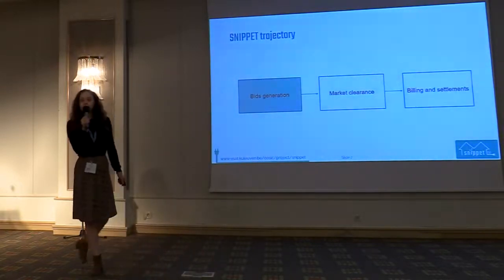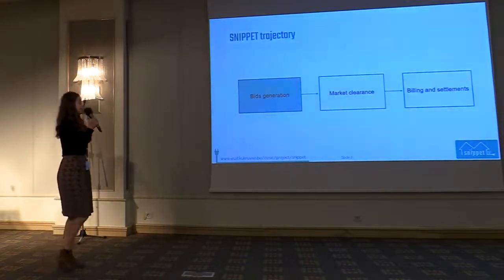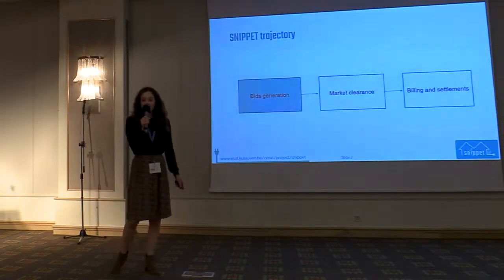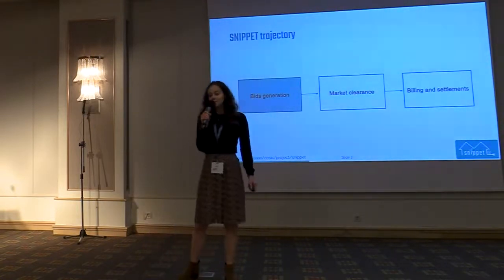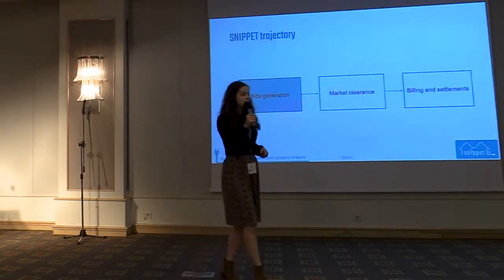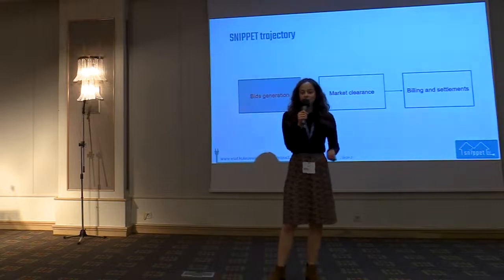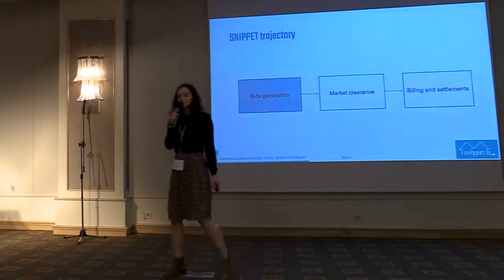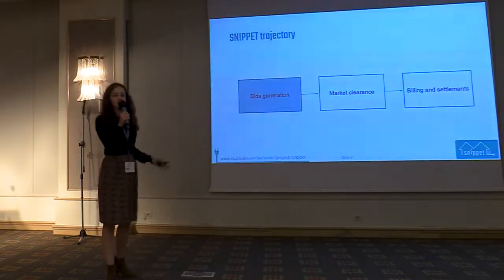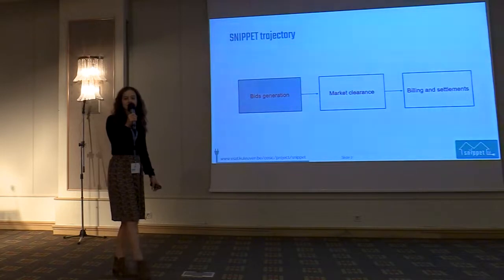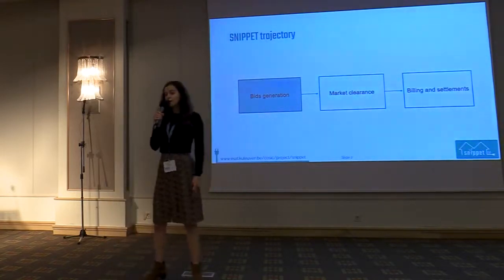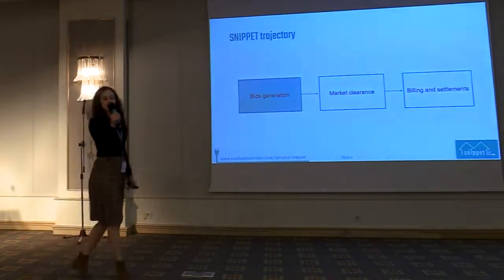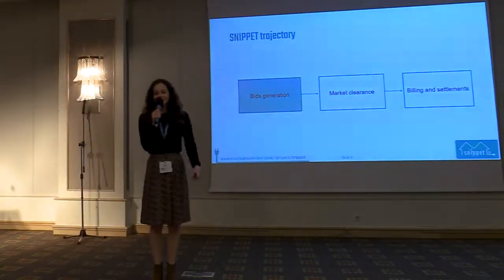After the bids have been cleared, the bills will have to be issued — and it's not an easy task for the flexibility market, but also for the peer-to-peer market, because it's very difficult to forecast demand and generation and there are always deviations from committed volumes. Akash will present a way to fairly allocate the cost of these deviations within the community or market-wide.